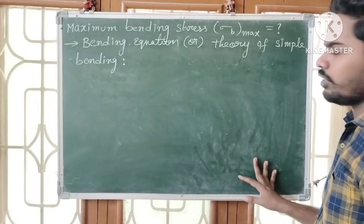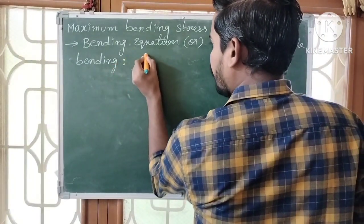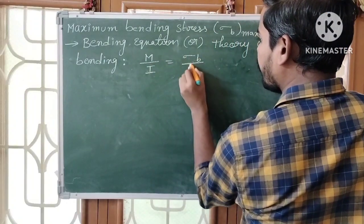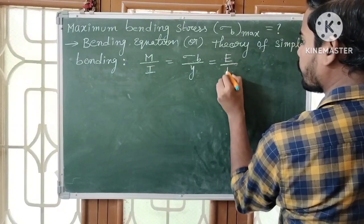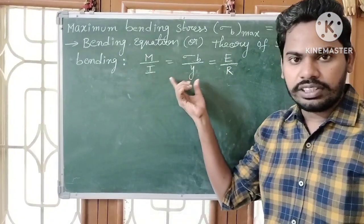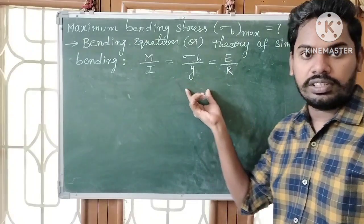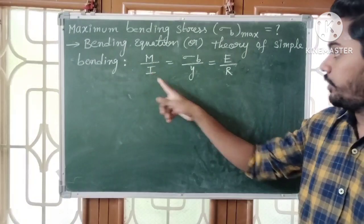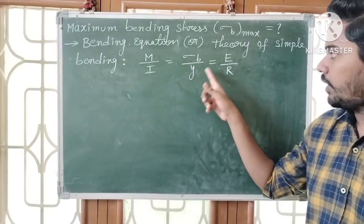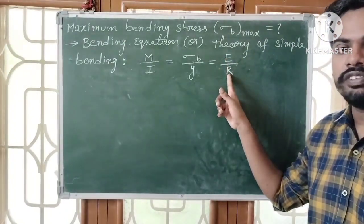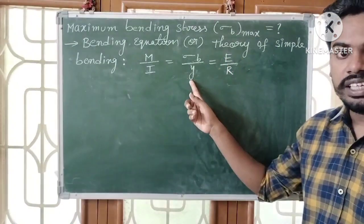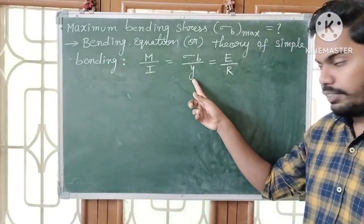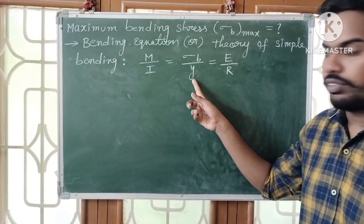According to the bending equation or theory of simple bending: M/I = σB/Y = E/R. Here M is the bending moment, I is the moment of inertia, σB is the bending stress, E is Young's modulus, R is the radius of curvature of the beam, and Y is the distance from the neutral axis to the outer layer of the beam.